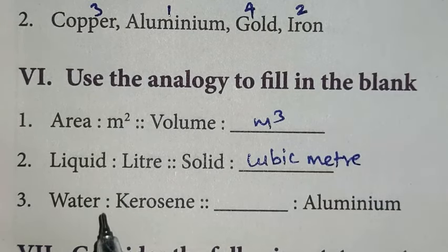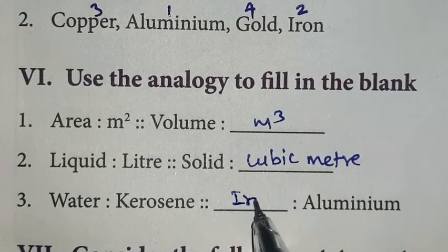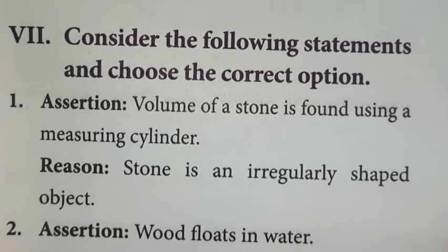Water, kerosene. So water density high. Next, less density is kerosene. Next, aluminum is given less density. So more than this one, density is iron. Next, seventh part.